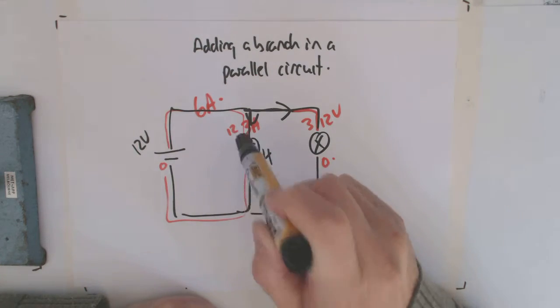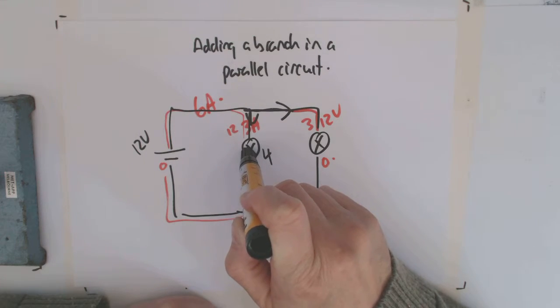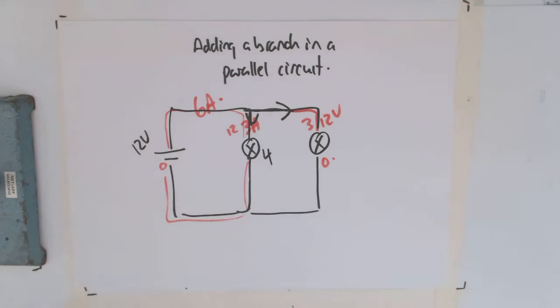We're not changing its resistance. Therefore, its current through it can't change. It just increases the current in the whole circuit.